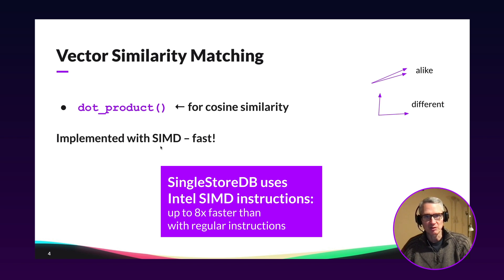And SIMD is a processor technology that allows you to operate on wide registers where you can pack, say, eight floating point numbers into a single register and do a register to register multiply that can multiply eight pairs of numbers together in a single instruction. So that can be super fast, up to eight times faster than doing it with regular instructions.